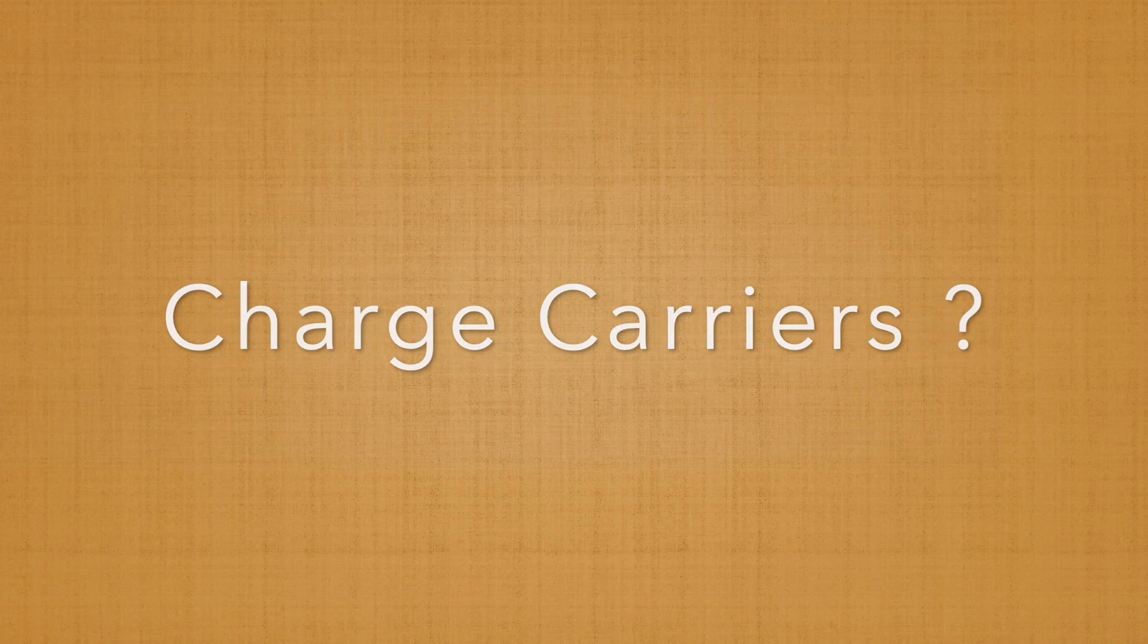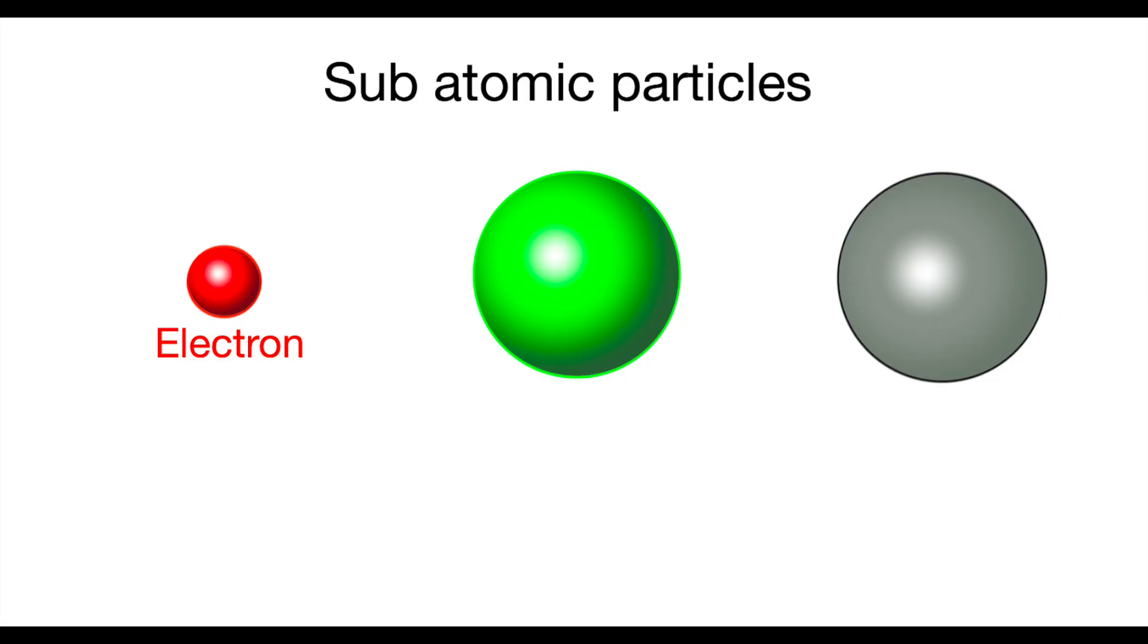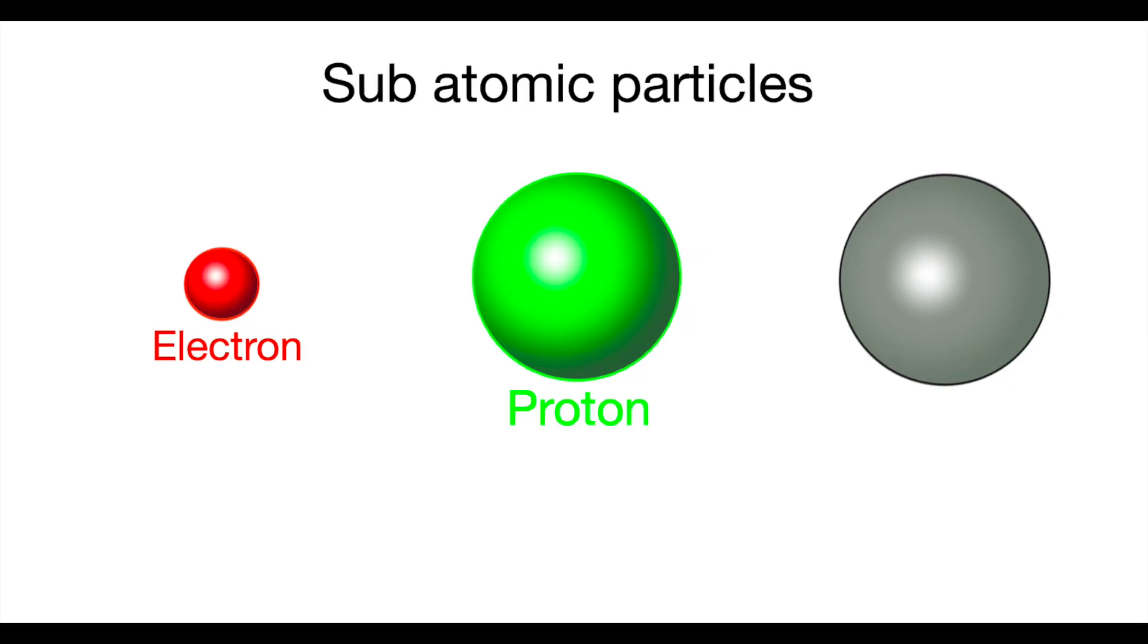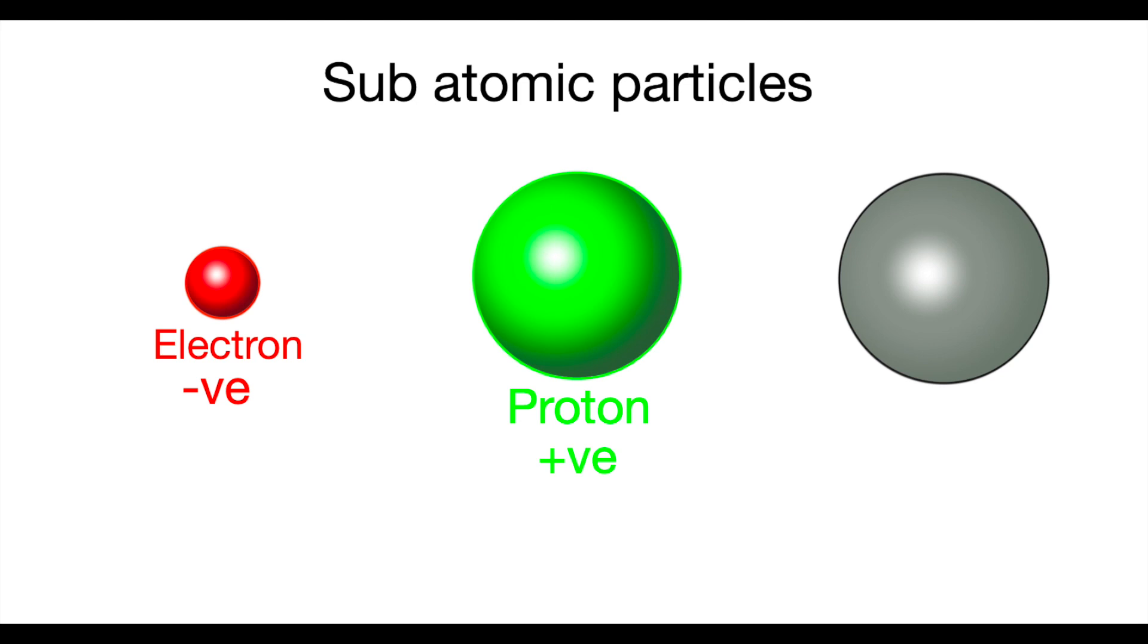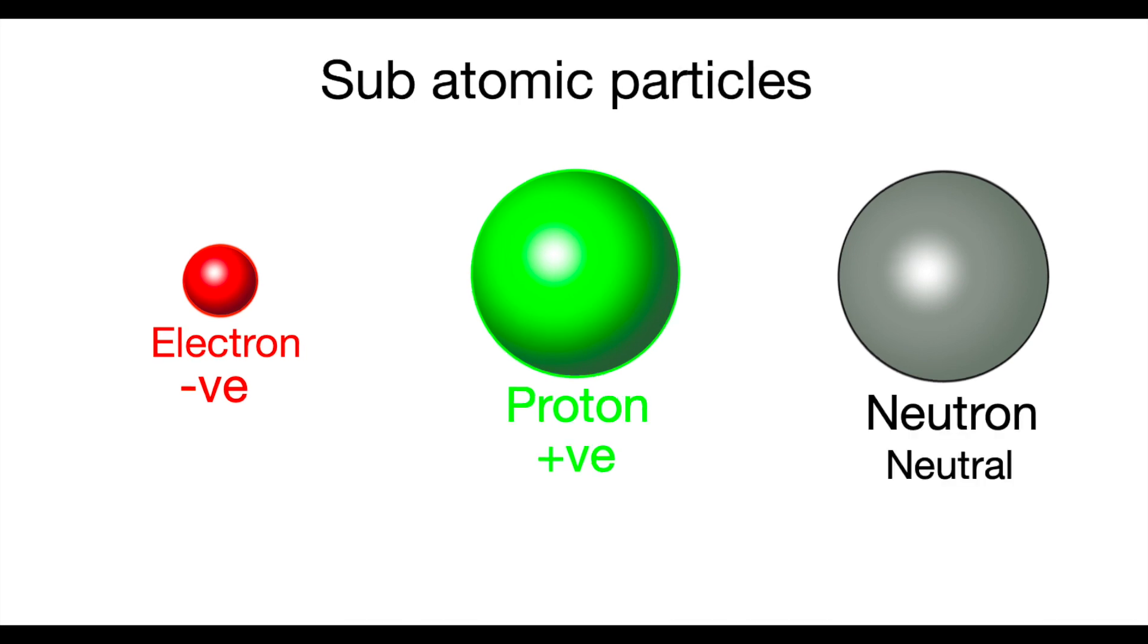Now what do you think about the charge carriers? The subatomic particles electron and proton carry charges. Proton carries positive charge, electron carries negative charge, and neutron is neutral.